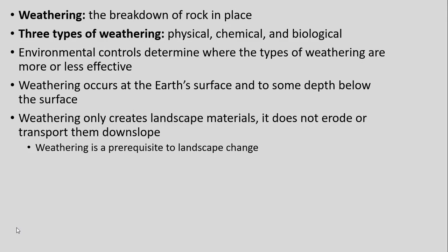In this video we're focusing on weathering — breaking down rock in place. There are three main types: physical, chemical, and biological. Different environmental controls like climate, biome, plant distribution, and the geological makeup of the rock itself determine which types of weathering are more or less effective. Weathering generally occurs at the Earth's surface, though it can occur in soil to some depth. It is not erosion — weathering is a prerequisite to erosion, but it is just changing things in place.